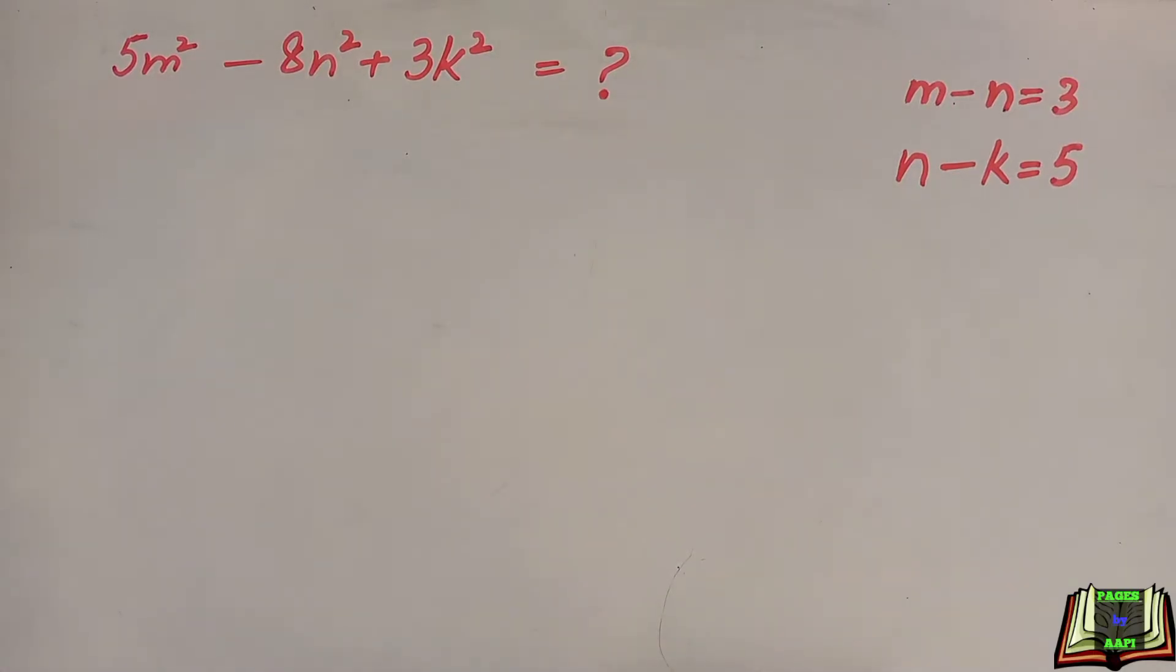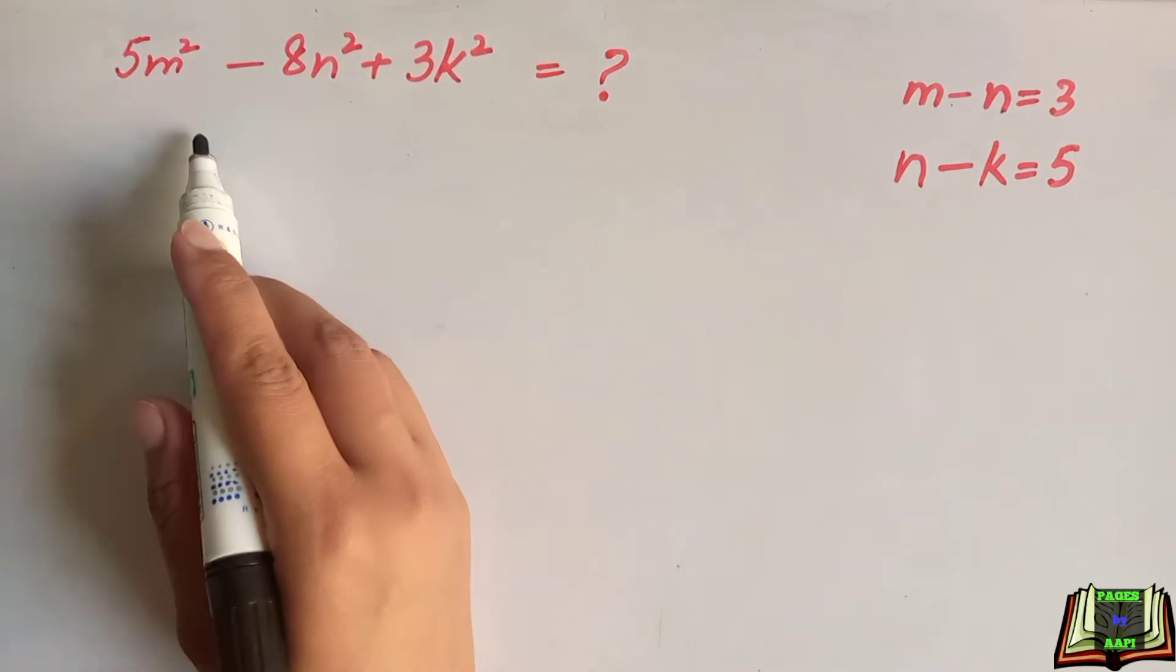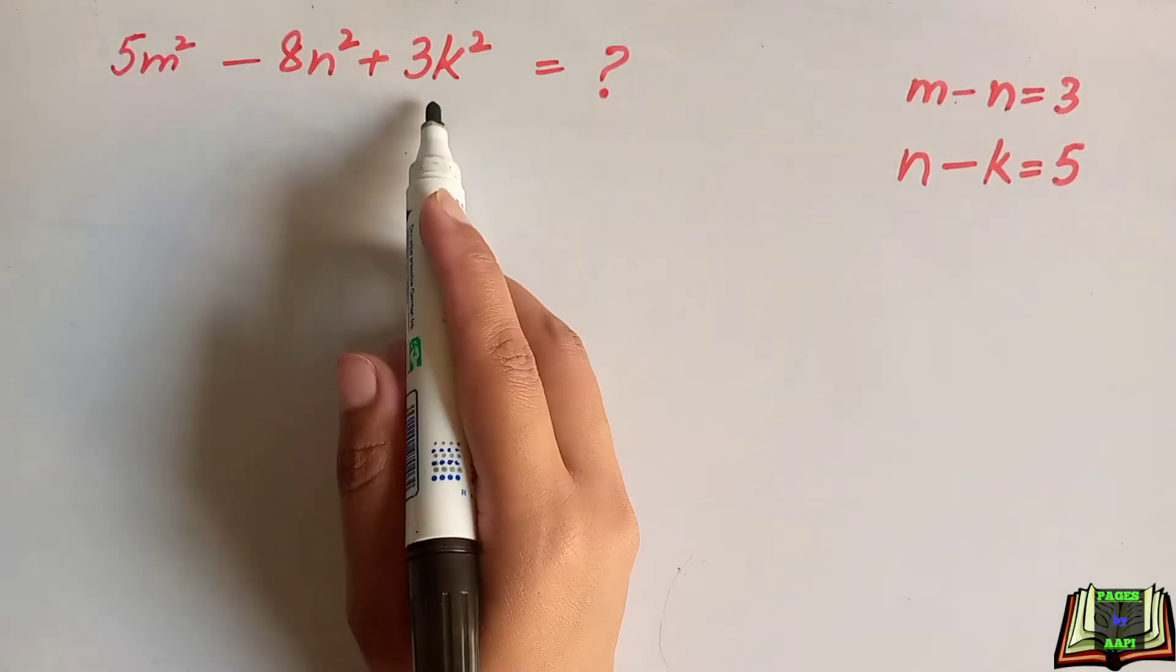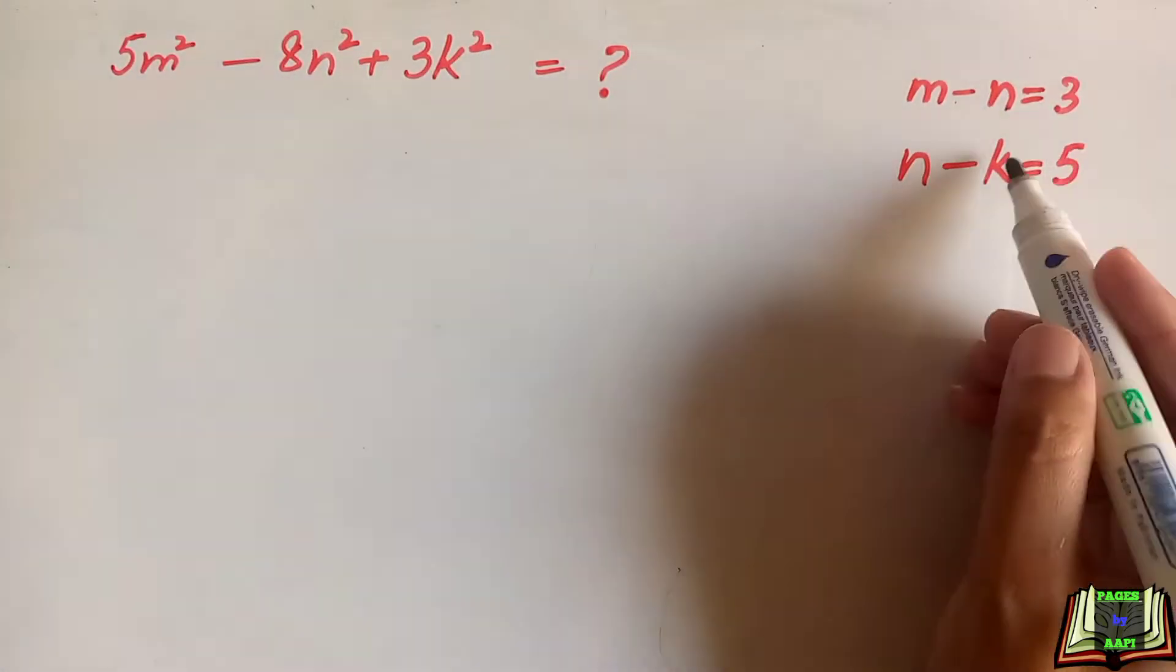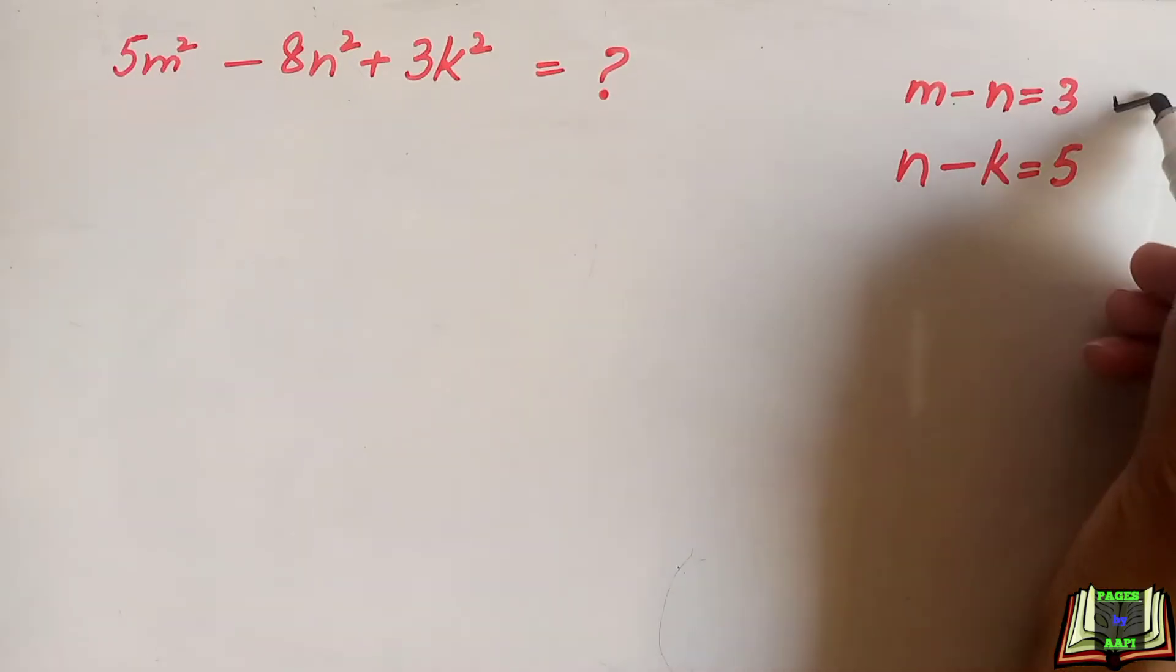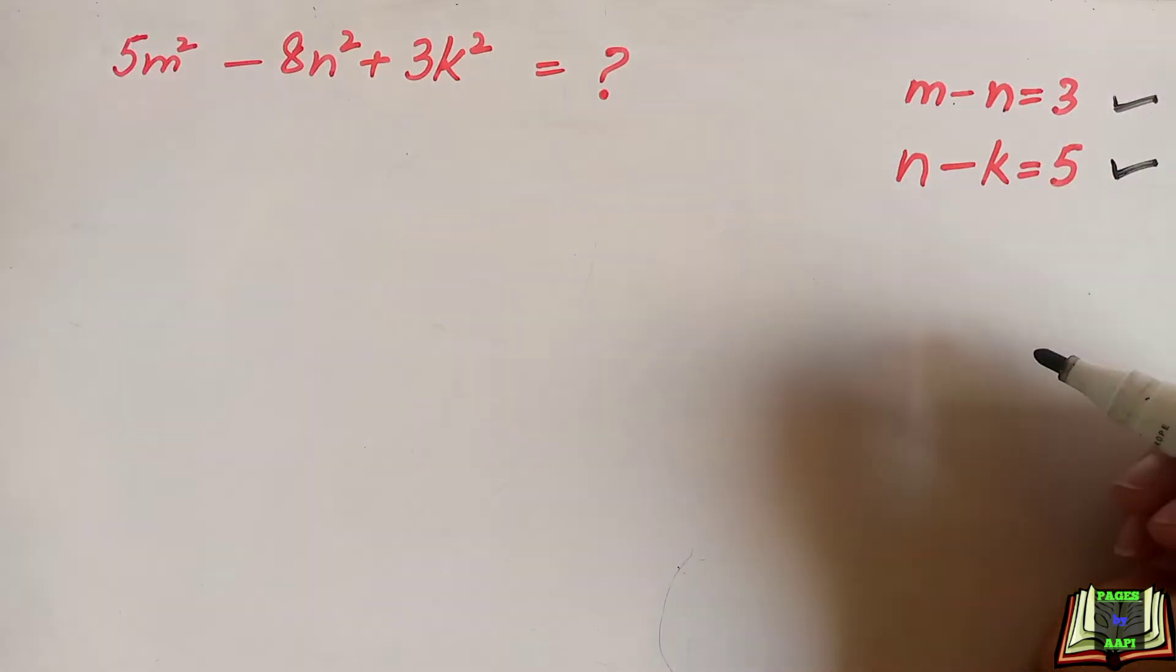Welcome all of you on our page channel. In this video we are going to solve this equation: 5m² - 8n² + 3k², with given values m - n = 3 and n - k = 5.